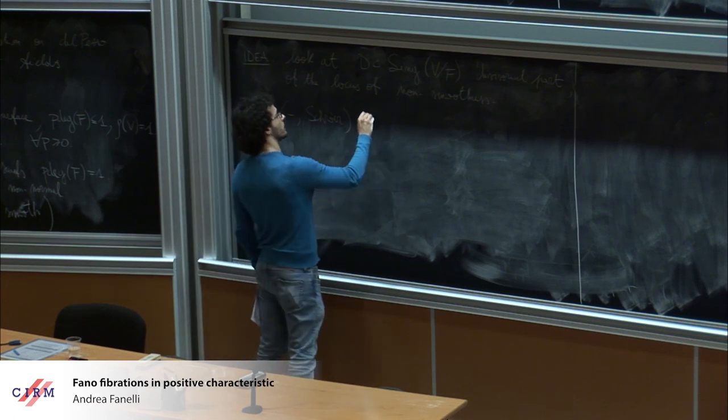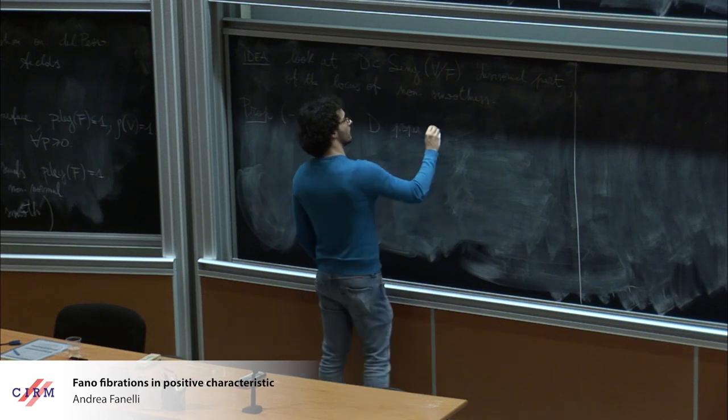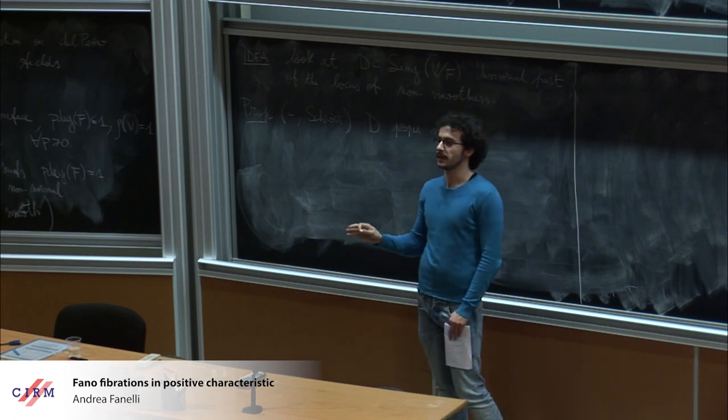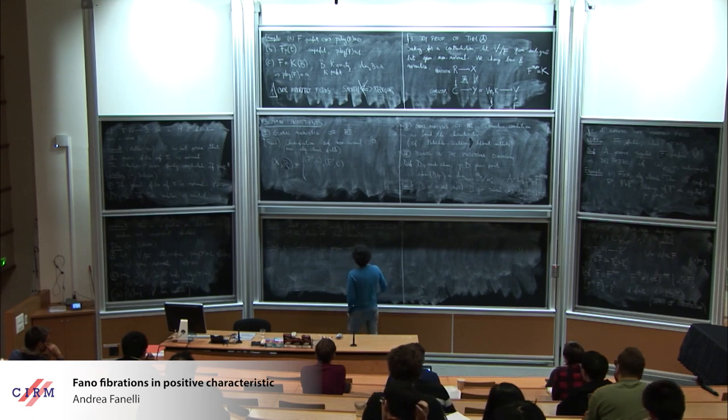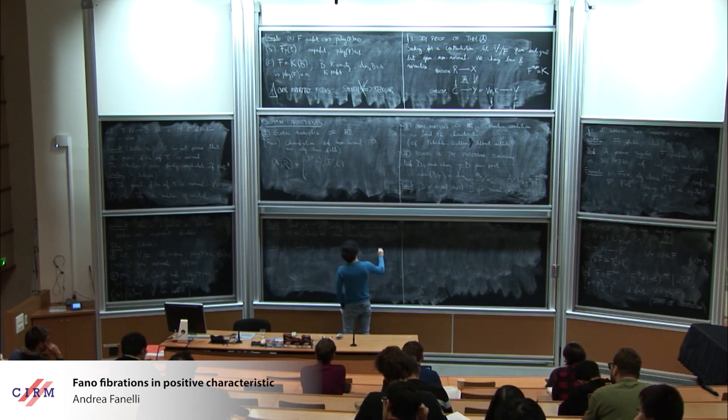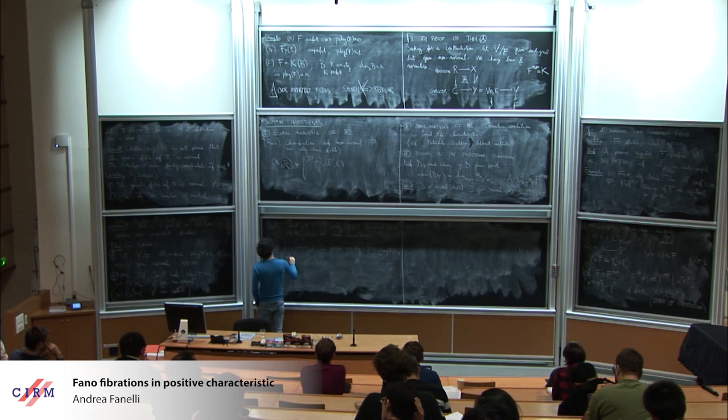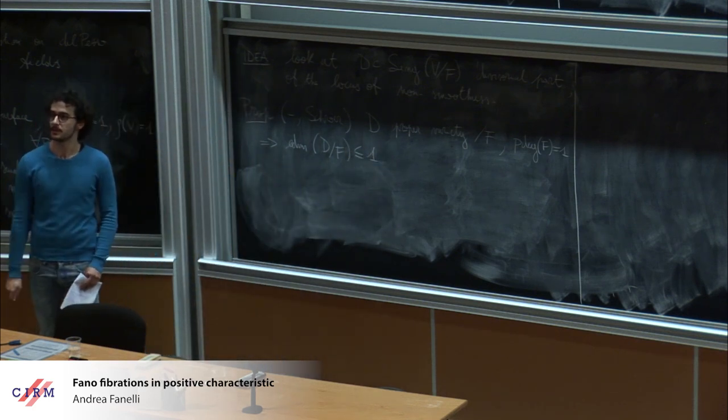And the proposition we proved with Stefan is the following, which is, so the idea is the following. If you have something which is, start with something which is reduced. If it's over a perfect field, then that's never gonna be positive, that embedding dimension. If you work over an imperfect field, is there a bound which comes from the field on that number? The answer is yes. So this is exactly the p degree. So the statement is the following. So take D, a proper variety. When I say scheme, it's algebraic. When I say variety, I mean integral scheme, so irreducible and reduced. Variety over F with p degree of F equal one. Then the embedding dimension of D over F is bounded by one, which is exactly the p degree.